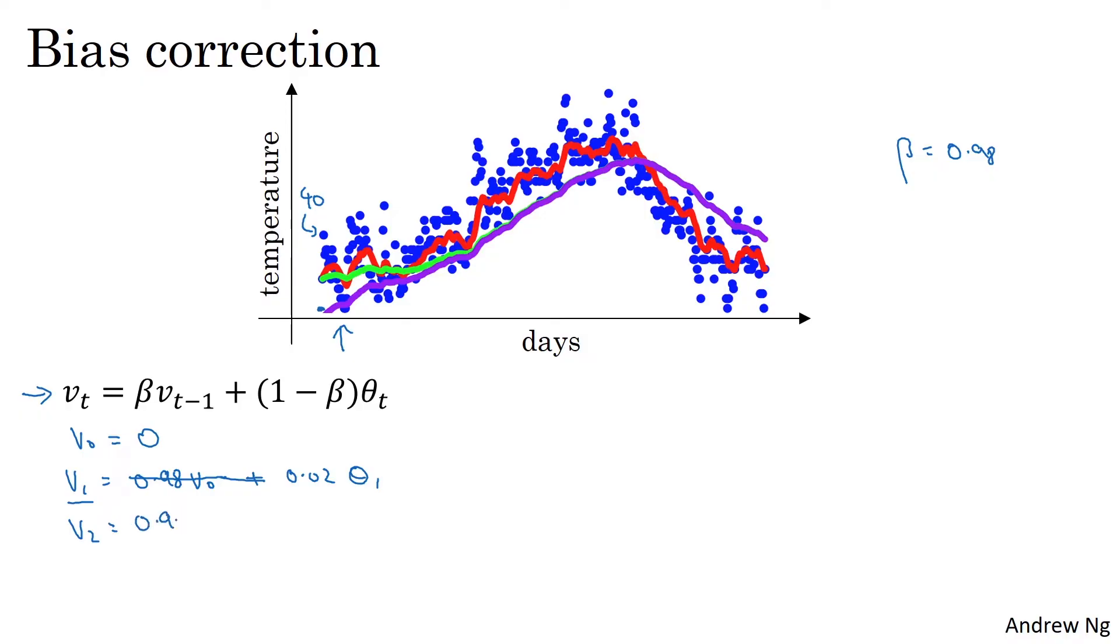V2 will be 0.98 times V1 plus 0.02 times theta 2. And if you plug in V1, which is this down here and multiply it out, then you find that V2 is actually equal to 0.98 times 0.02 times theta 1 plus 0.02 times theta 2. And that's 0.0196 theta 1 plus 0.02 theta 2. So assuming theta 1 and theta 2 are positive numbers, when you compute this, V2 will be much less than theta 1 or theta 2. So V2 isn't a very good estimate of the first two days temperature of the year.